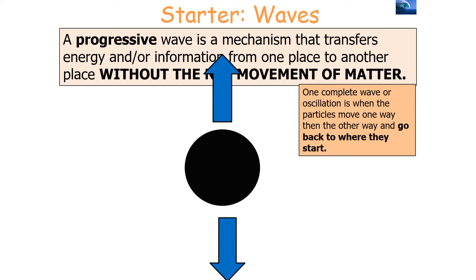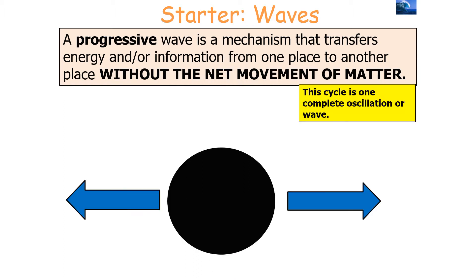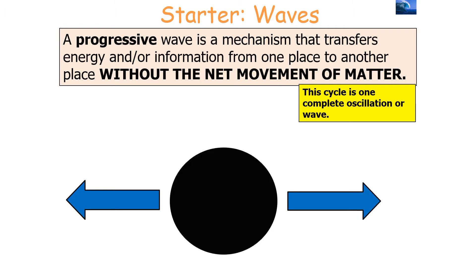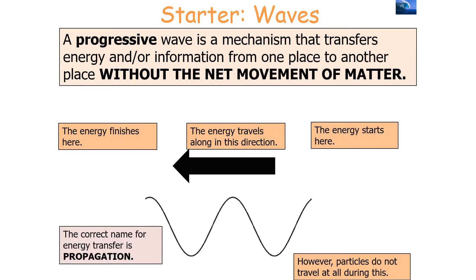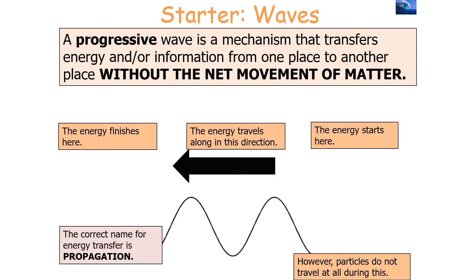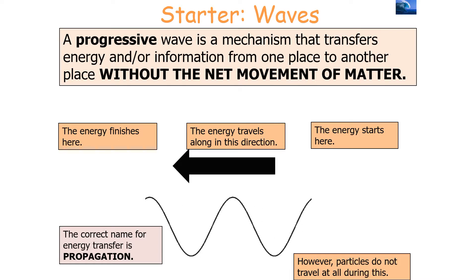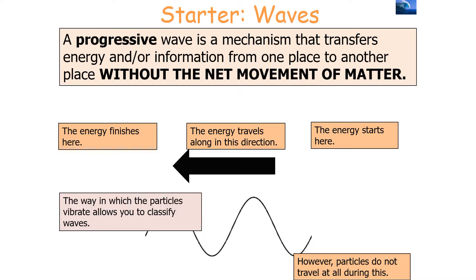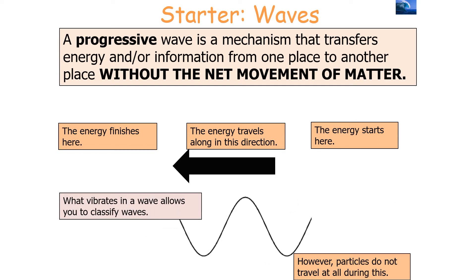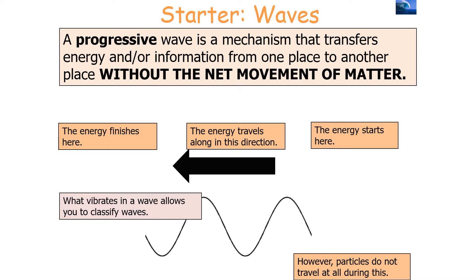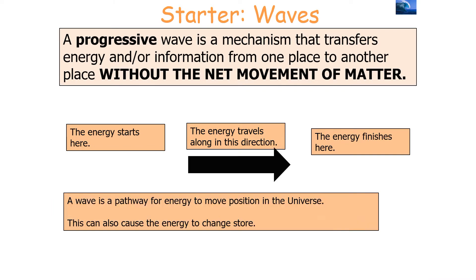One complete oscillation or wave is when the particle moves one way, then the other way, and returns to where it started — from its starting point, oscillating one way, back to the starting point, then the other way, then back again. When a particle carries out this oscillation, energy is transferred along — the correct name for this energy transfer is called propagation. The way in which particles vibrate allows you to classify the different types of wave. A wave is also a pathway for energy to move in the universe and can cause an energy store to change.